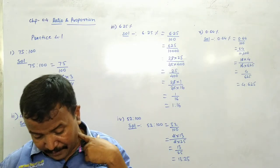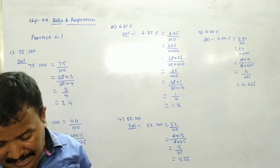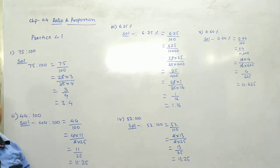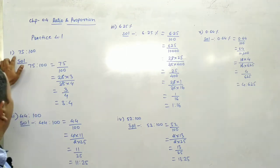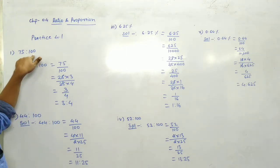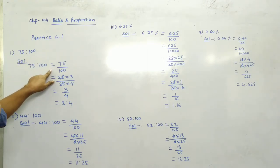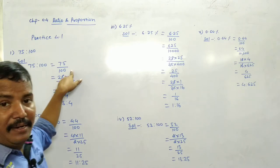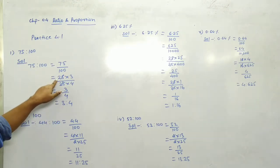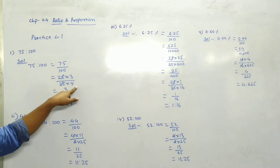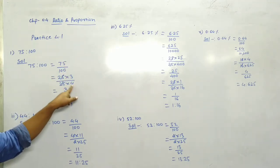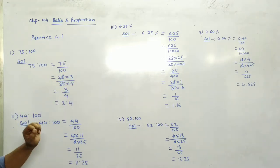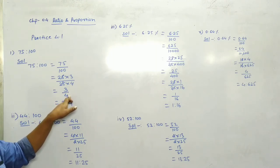Question number 3 is. Express the following percentage as ratio in the reduced form. Ratio ki reduce form me. First is 75 ratio 100. Solution, 75 ratio 100 is equal to 75 divided by 100. 25 into 3, 25 into 4. 25, 25 will be cancelled. Answer is 3 upon 4. And answer is ratio is 3 ratio 4.